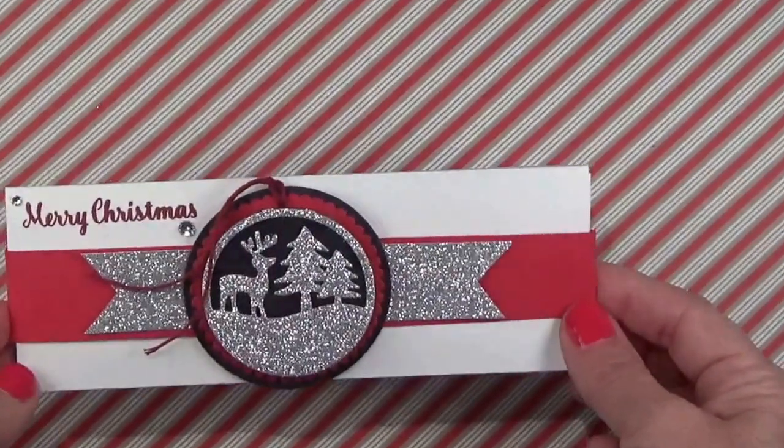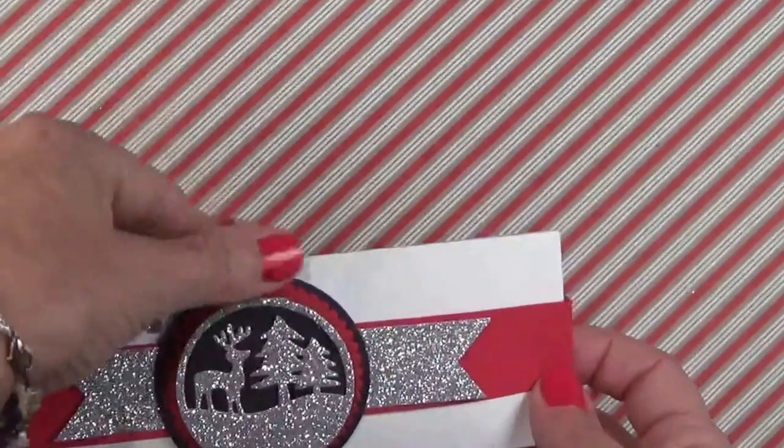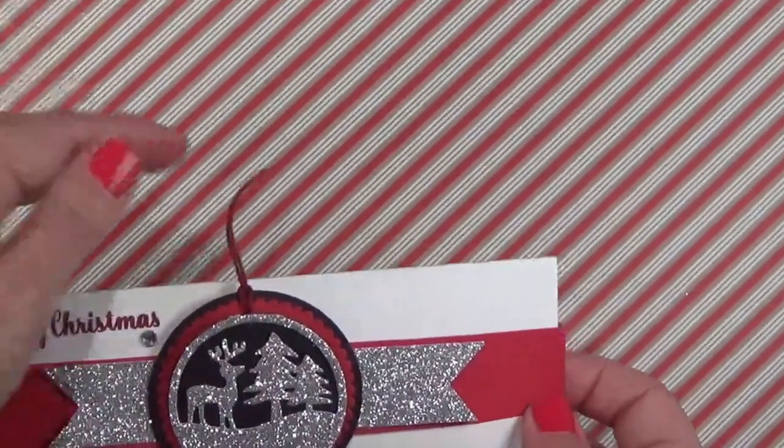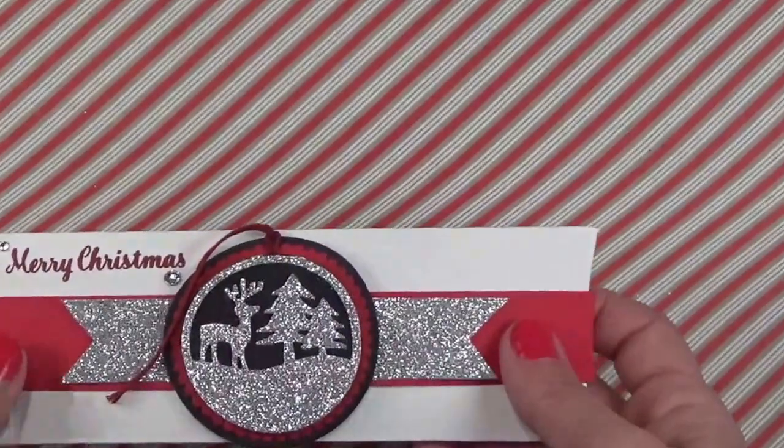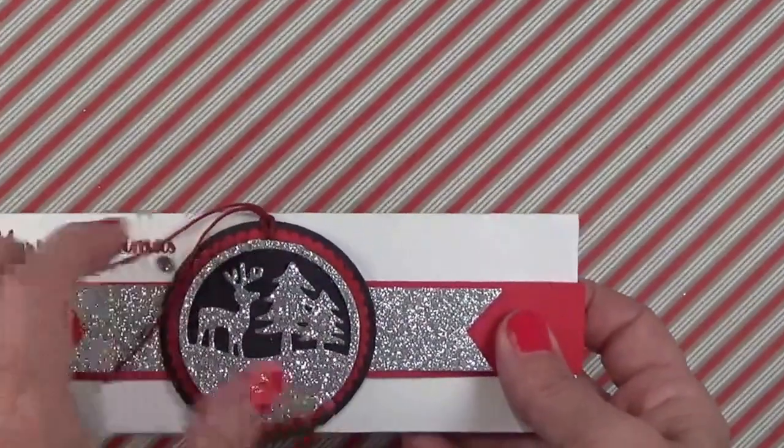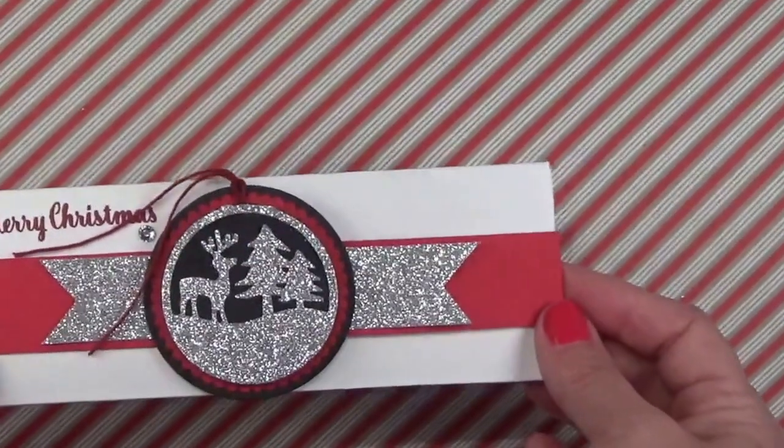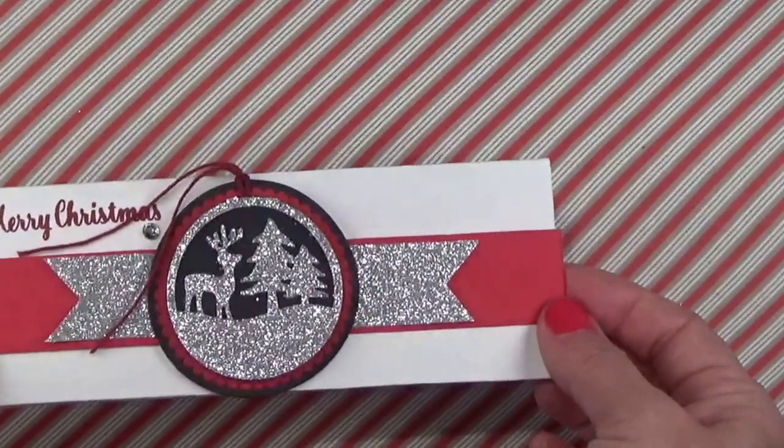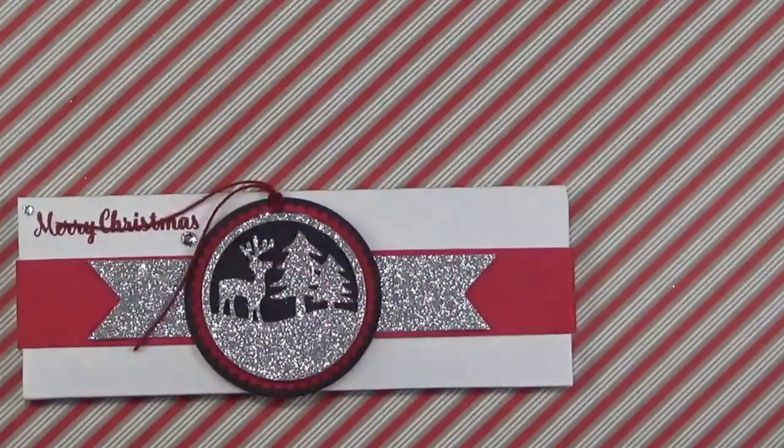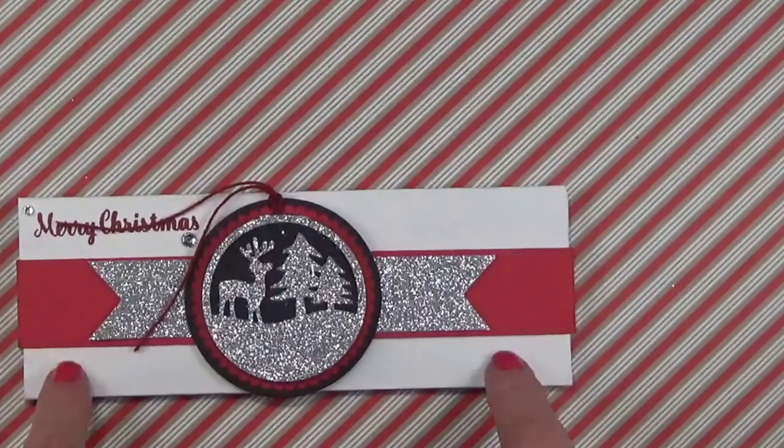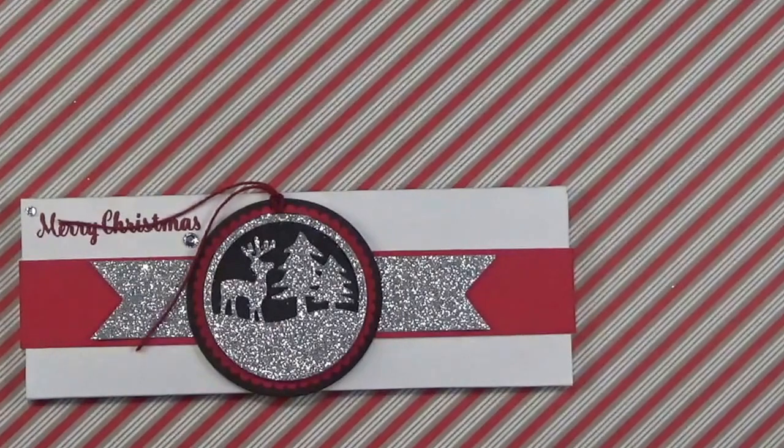This little medallion that I have on top I've put a string on so somebody could actually use this as a Christmas tree ornament if they want to, or they could also use it as a gift tag on a gift. This is very quick, simple, and easy to do. There's not a whole lot of paper needed to create this project and today I'm going to do the same thing but with red cardstock as opposed to white.